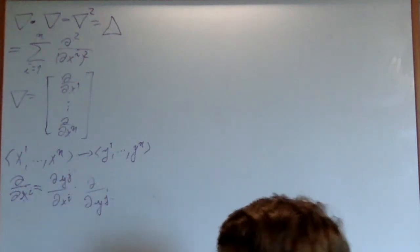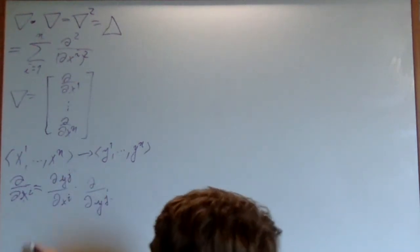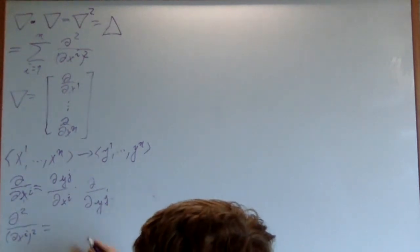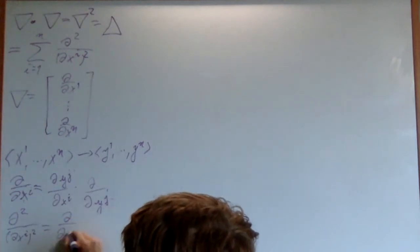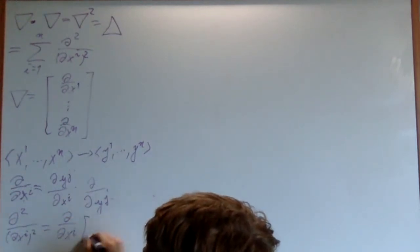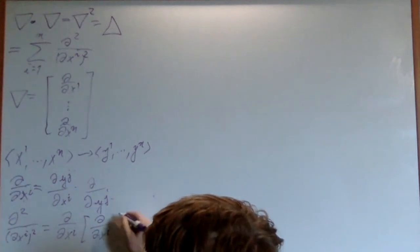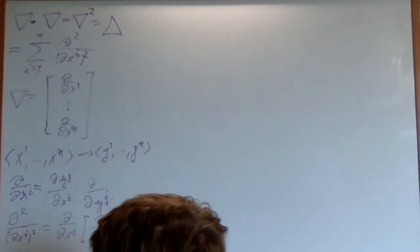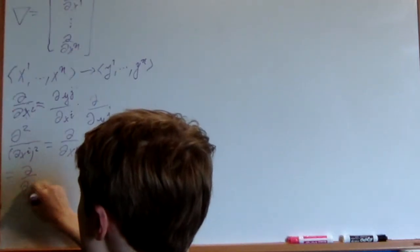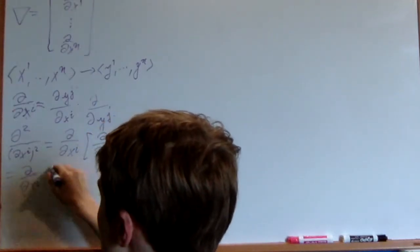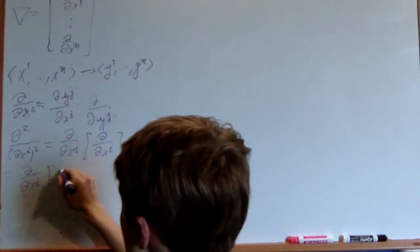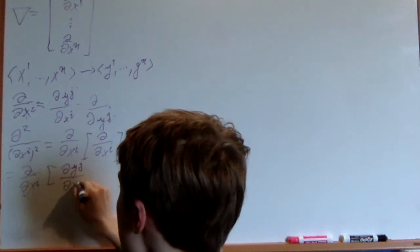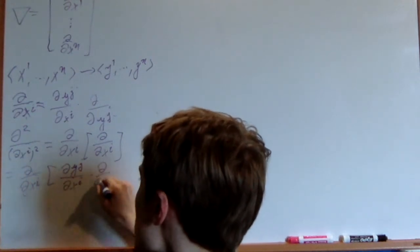So, how about we square it? We do del squared on del xi squared, which by definition is equal to del on del xi applied to del on del xi. And then, plugging in for the definition of del on del xi, for that first one, this is going to be del on del xi applied to del yj on del xi times del on del yj.